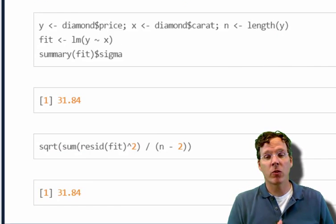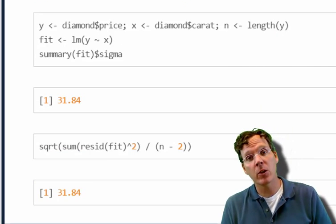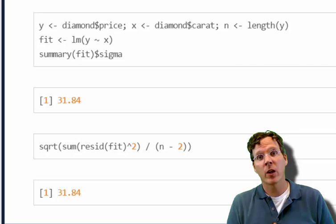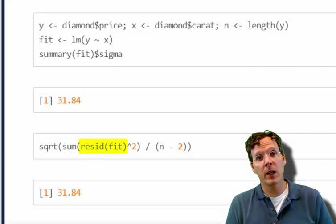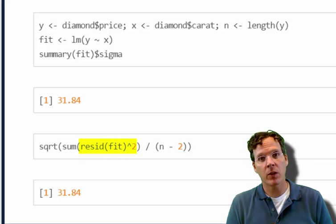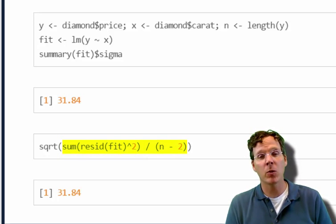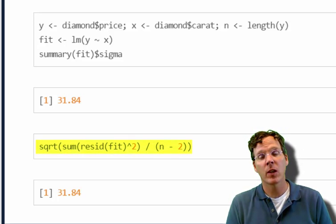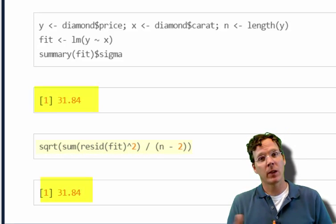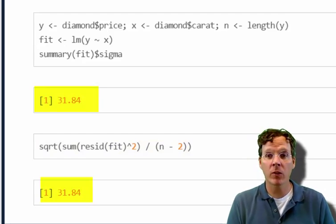So here, let's just confirm that I'm not lying to you and that the formula works. So if I do resid fit, that grabs the residuals. If I square it, it squares them. If I sum it, it adds up the squared values. If I divide by n minus 2, it takes the average of the unique residuals. And then if I square root it, you get $31.84. So I wasn't lying.